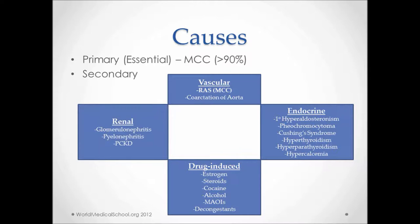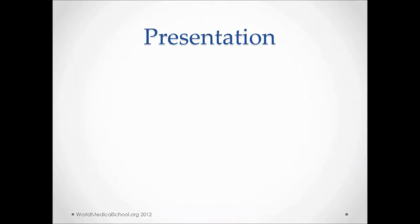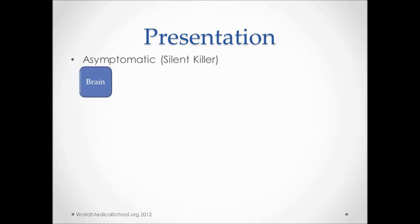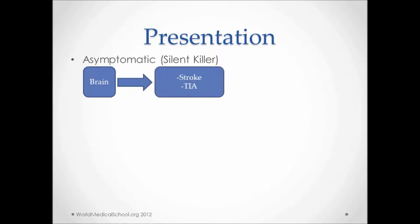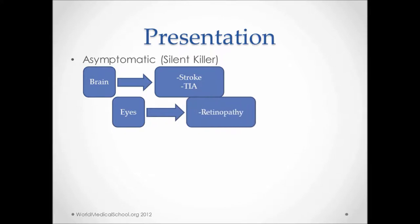Patients with mild to moderate hypertension do not usually present with any symptoms — that's why it's known as a silent killer. But in severe or chronic hypertension, end organ damage can be seen. In the brain, it can present as stroke or a TIA. In the eyes, retinopathy can be seen. Arteriovenular or AV nicking, microaneurysms, cotton wool spots, and papilledema are common findings in severe chronic hypertension.